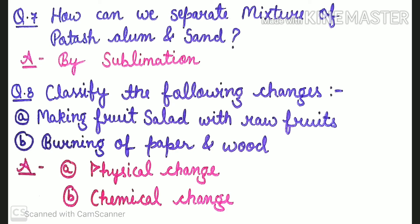Question number 7: how can we separate the mixture of potassium alum and sand? It is separated by the process of sublimation, because potassium alum is a sublimable substance. We convert it into vapor form and the sand is removed. Potassium alum is also known as potassium aluminum sulfate, with formula KAl(SO₄)₂·12H₂O.